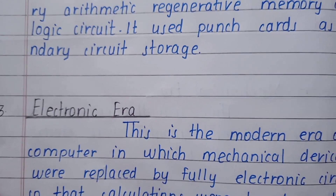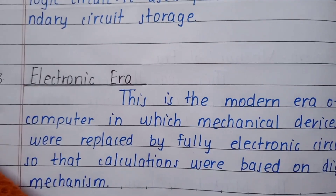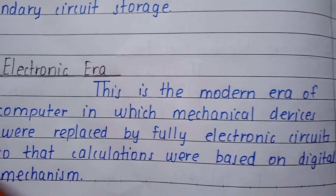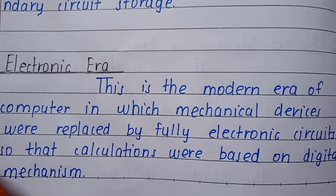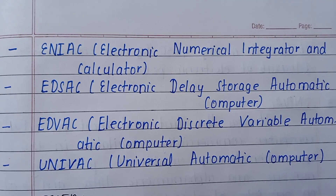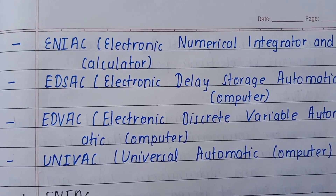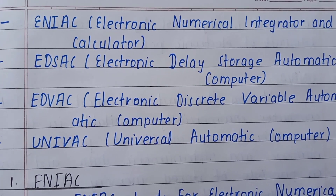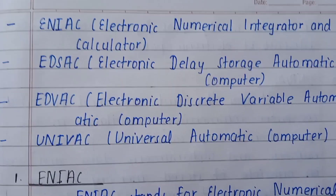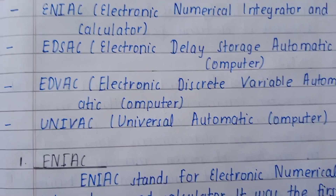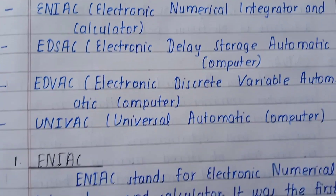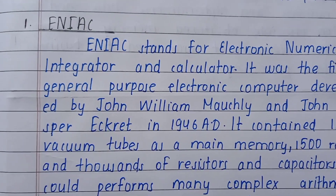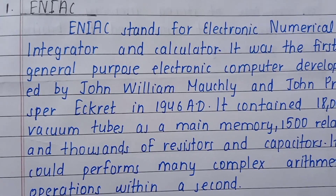After that came the electronic era — the modern era of computers, in which mechanical devices were replaced by fully electronic circuits so that calculations were based on digital mechanisms. ENIAC, EDSAC, EDVAC, and UNIVAC are examples of devices used in the electronic era.